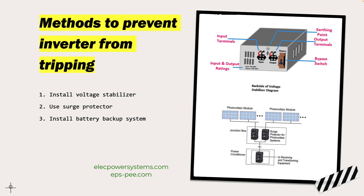To prevent the inverter from tripping, you can install voltage stabilizers, which help to regulate the voltage to within a specific range. Additionally, some inverters have built-in voltage regulation capabilities that can help to prevent tripping due to sudden fluctuations in grid voltage.